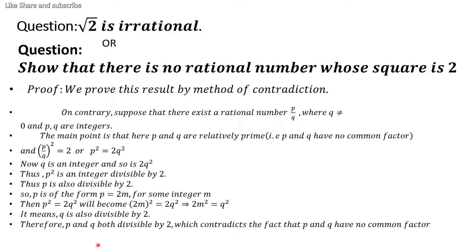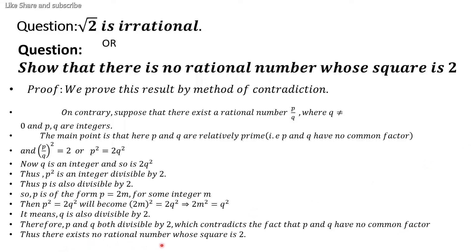Therefore, p and q are both divisible by 2, which contradicts the fact that p and q have no common factor. Hence there exists no rational number whose square is 2. This completes our proof.